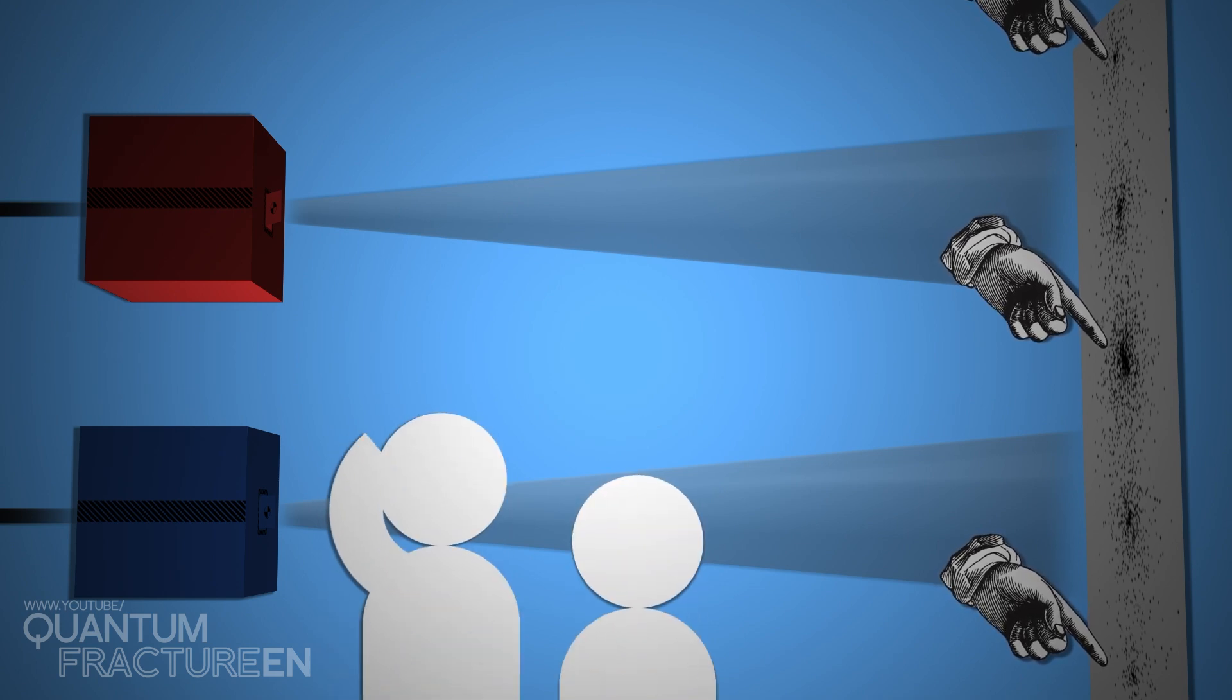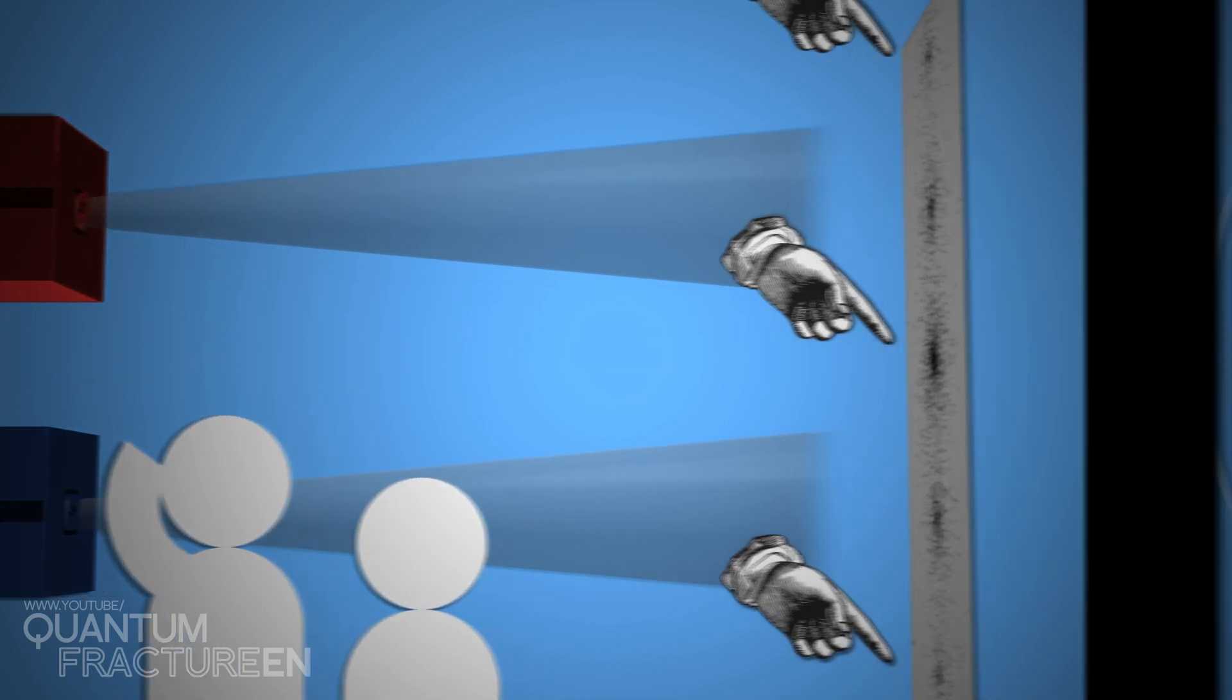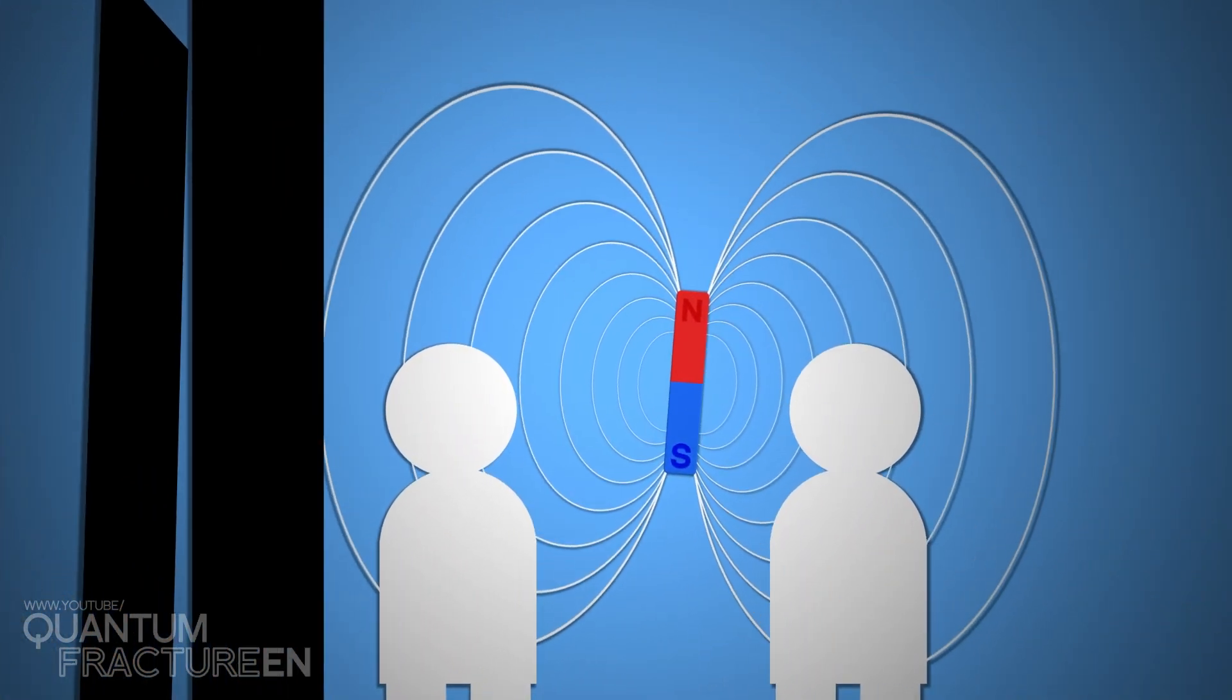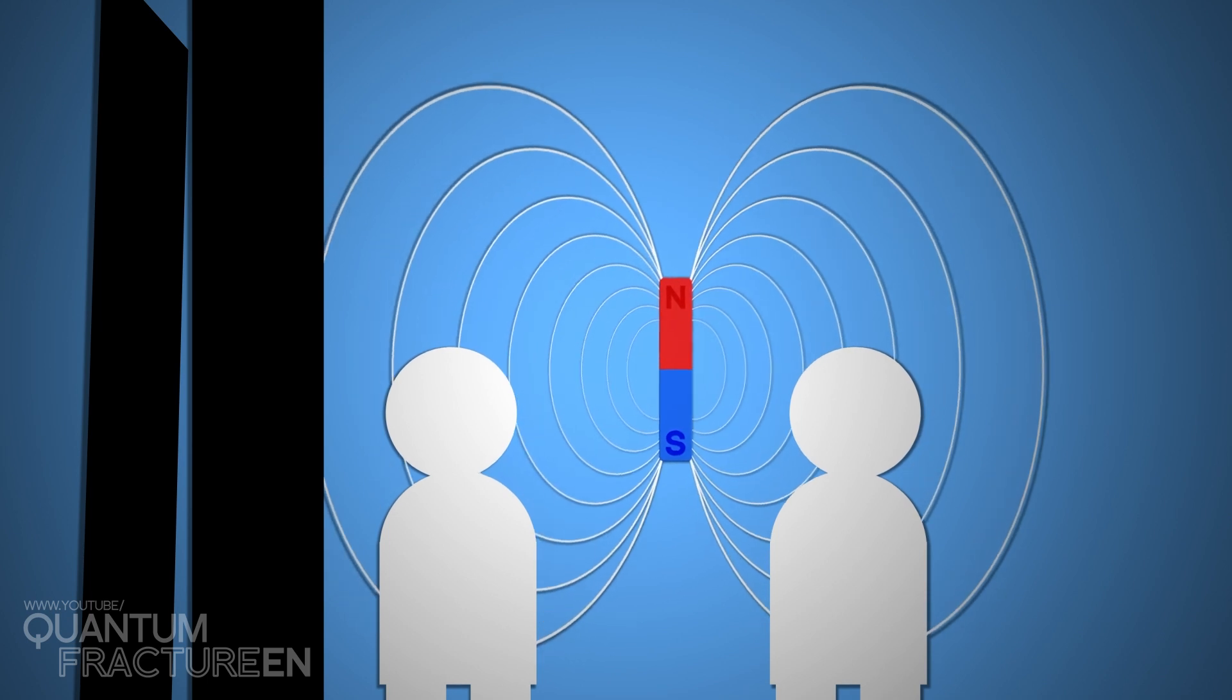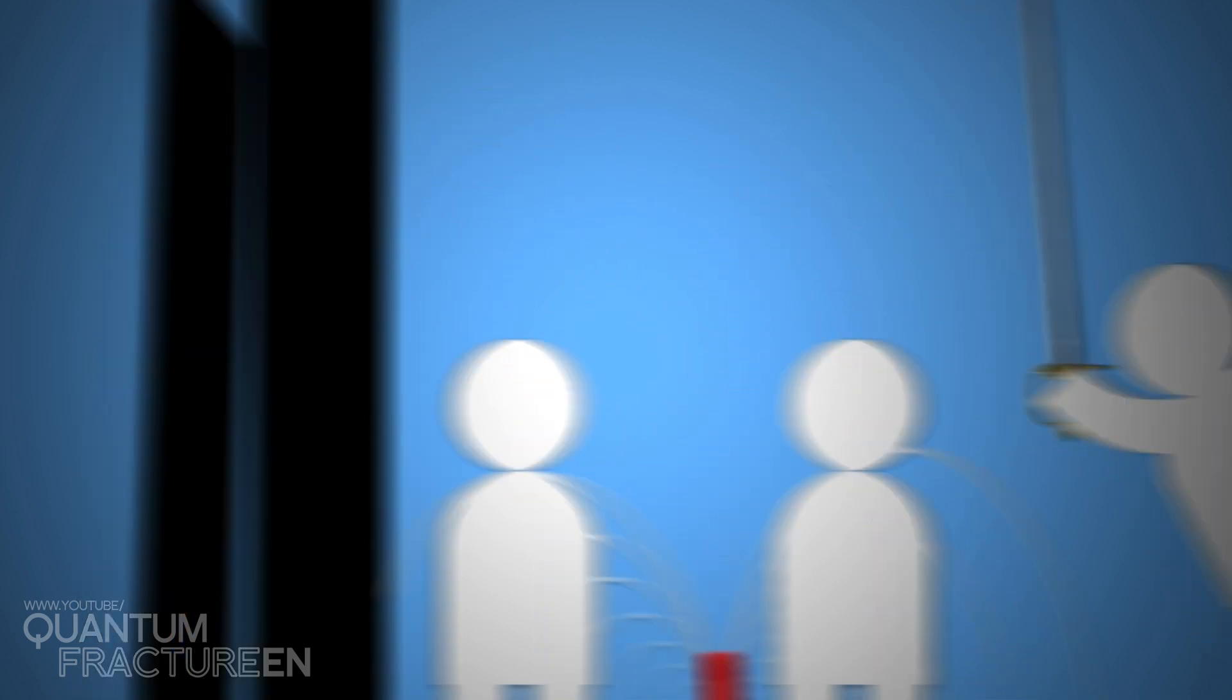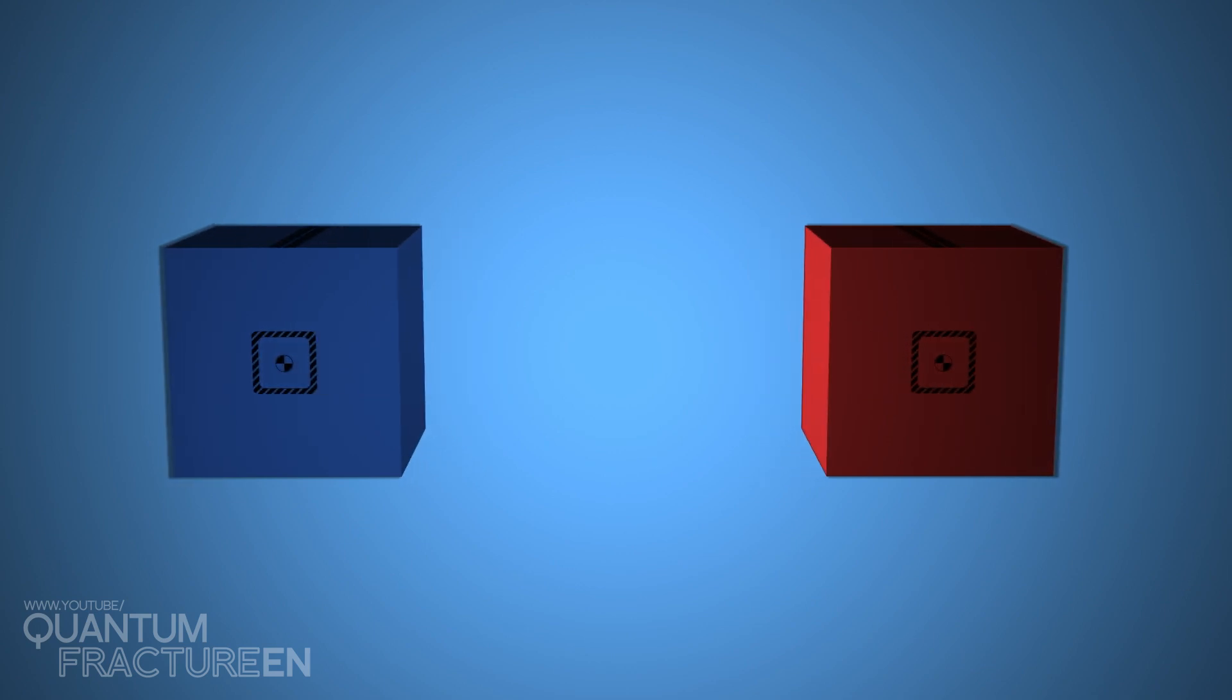I'm guessing that the experimenter suspected this was due to something outside the lab. For instance, maybe in the room next door, other physicists were playing with magnetic fields that somehow affected the atoms. So they nicely asked their neighbors to cut it out and, to be doubly sure, decided to try moving the boxes further apart.